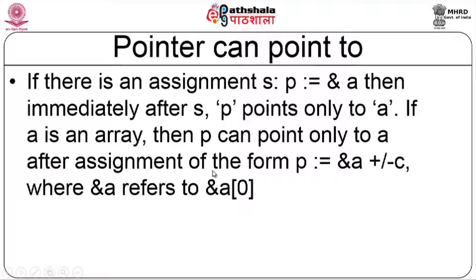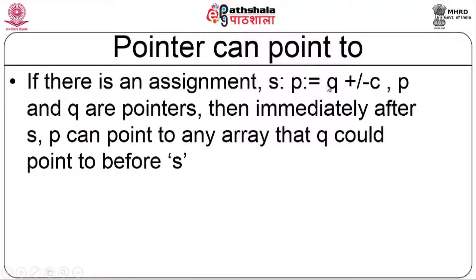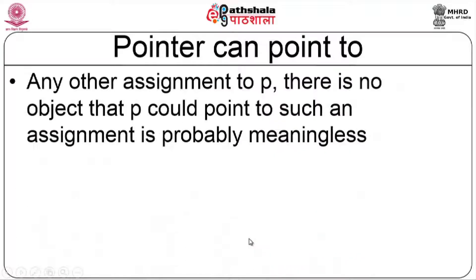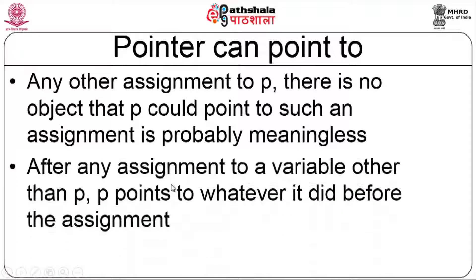If a is an array, p can point only within a. After an assignment of the form p = &a ± c, where &a refers to the address of the first element, p points within a. If p = q ± c where p and q are pointers and c is non-zero, then after this assignment, p points to where q is already pointing. If p = q, then p points to what q points to. For any other assignment to a variable other than p, p points to whatever it did before.